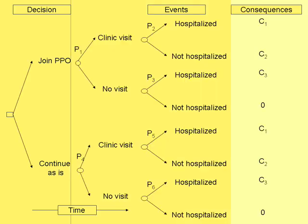Last, we point out the consequences. We show that the pathway of joining the PPO, having a clinic visit and having hospitalization, has a total cost equivalent to C1. We also show that joining the PPO, having no clinic visits and no hospitalization, has a total cost of zero. These costs are displayed for all of the pathways in the decision tree.